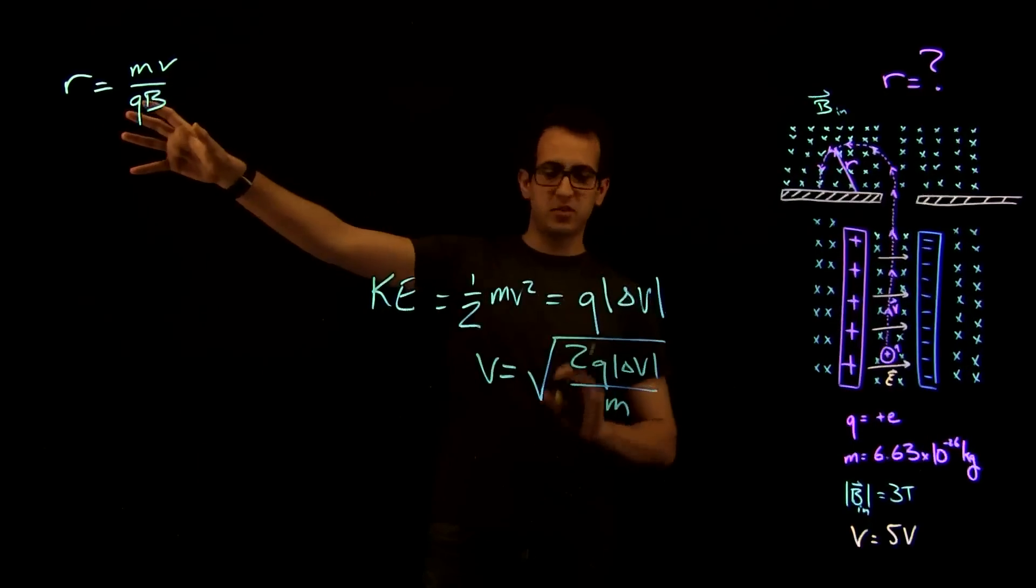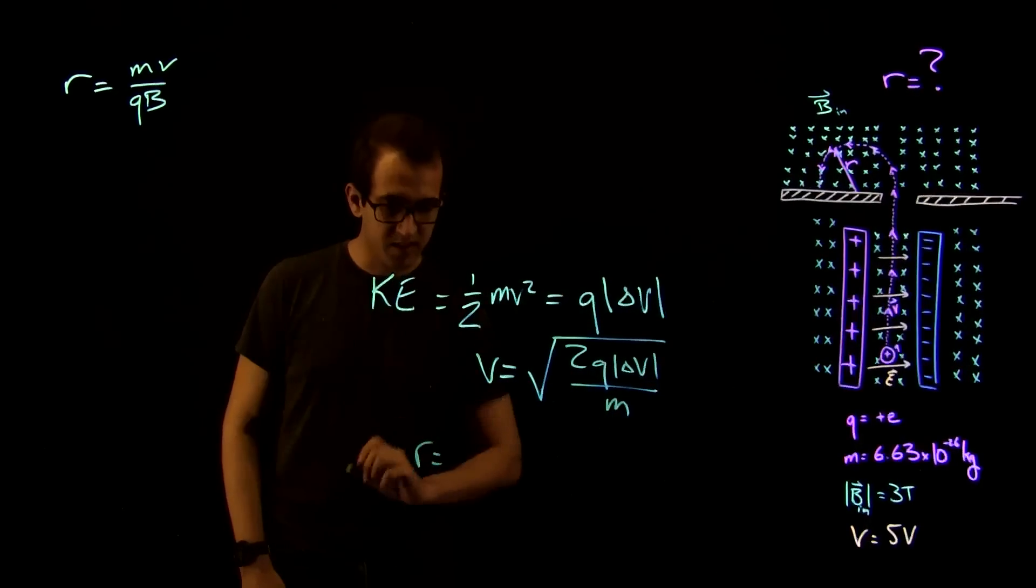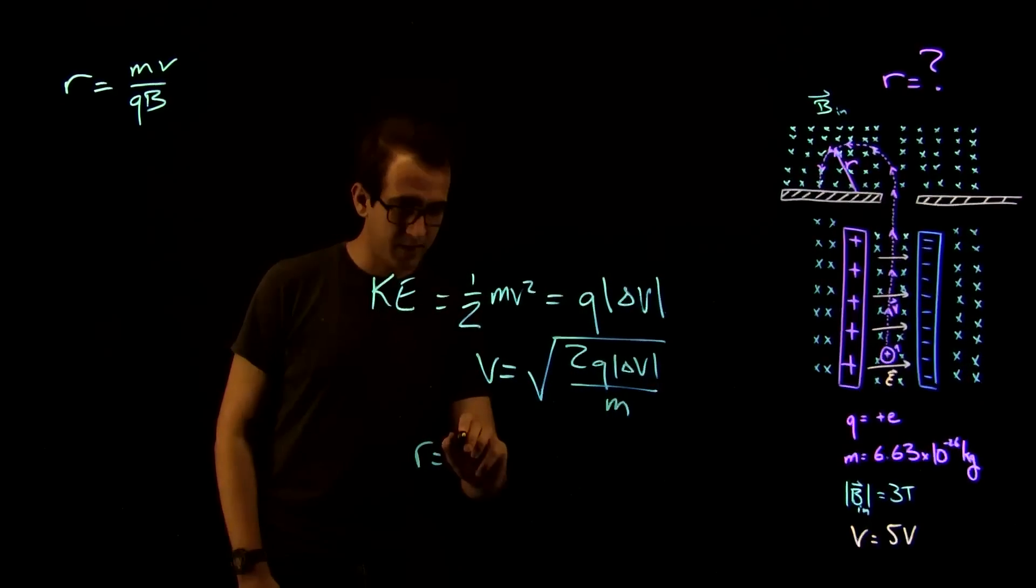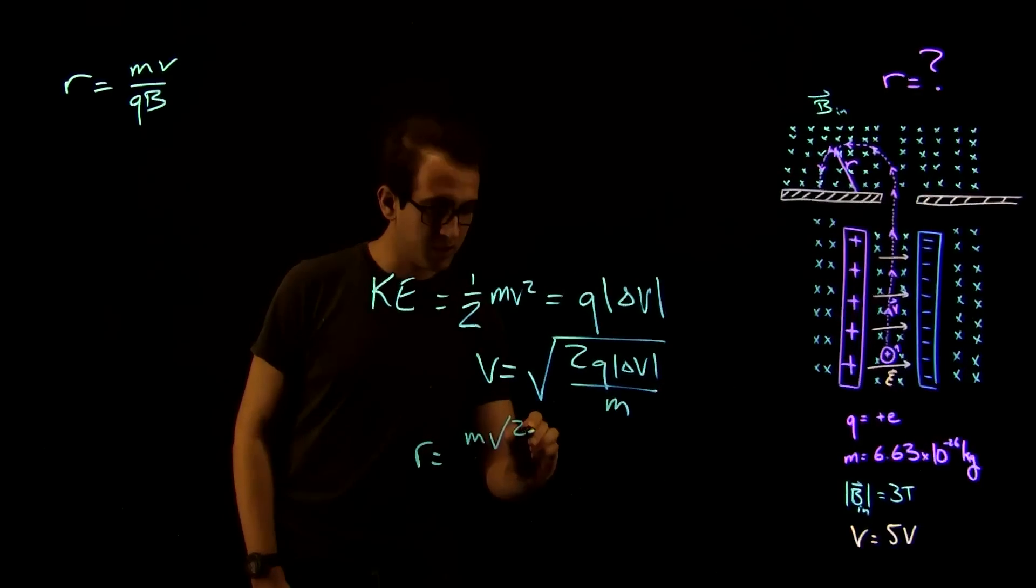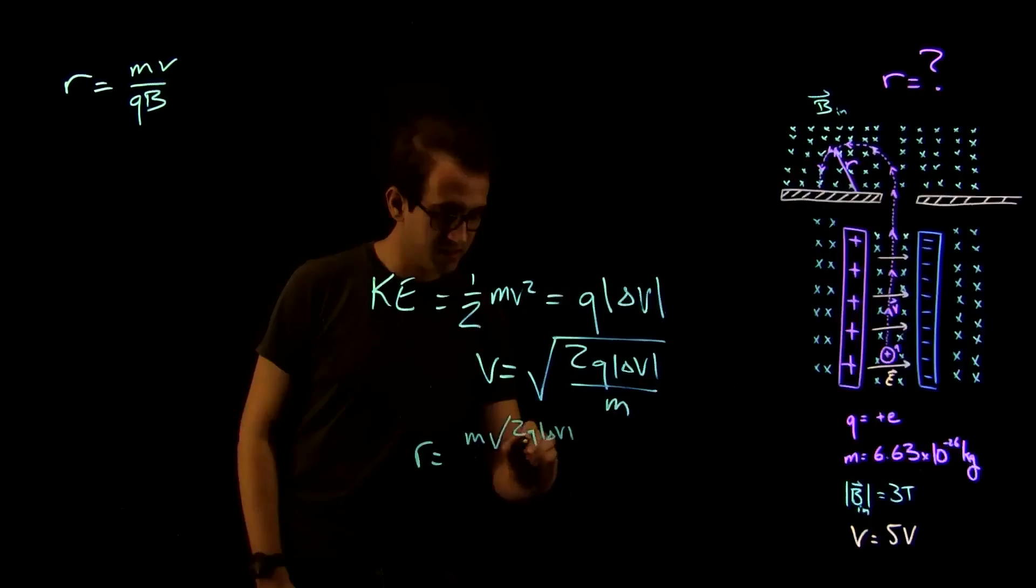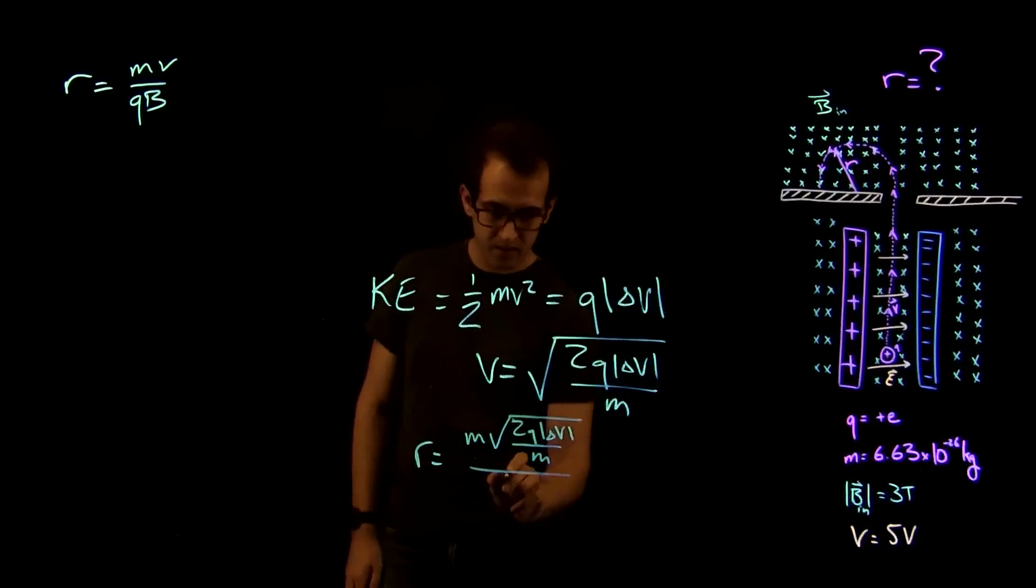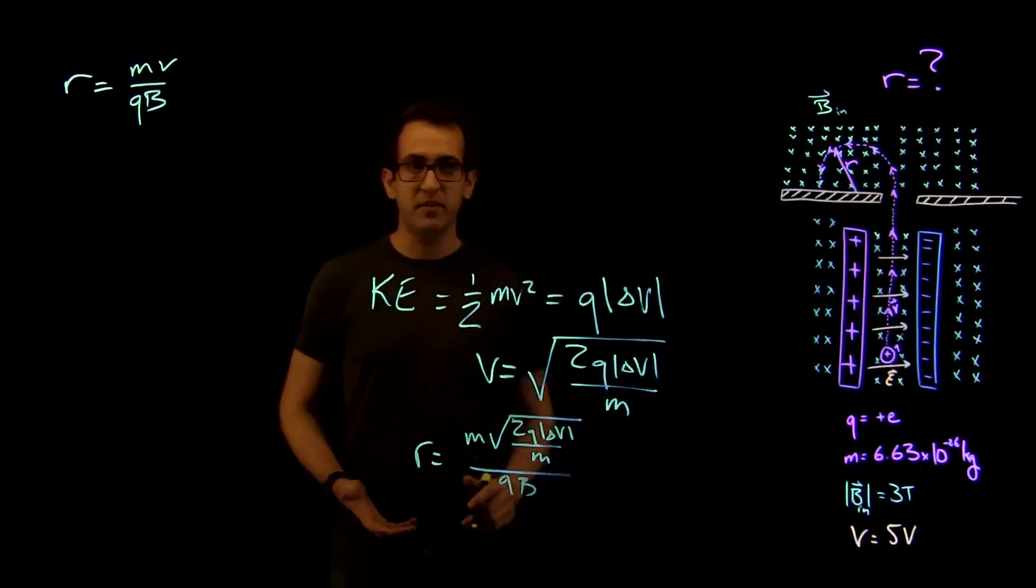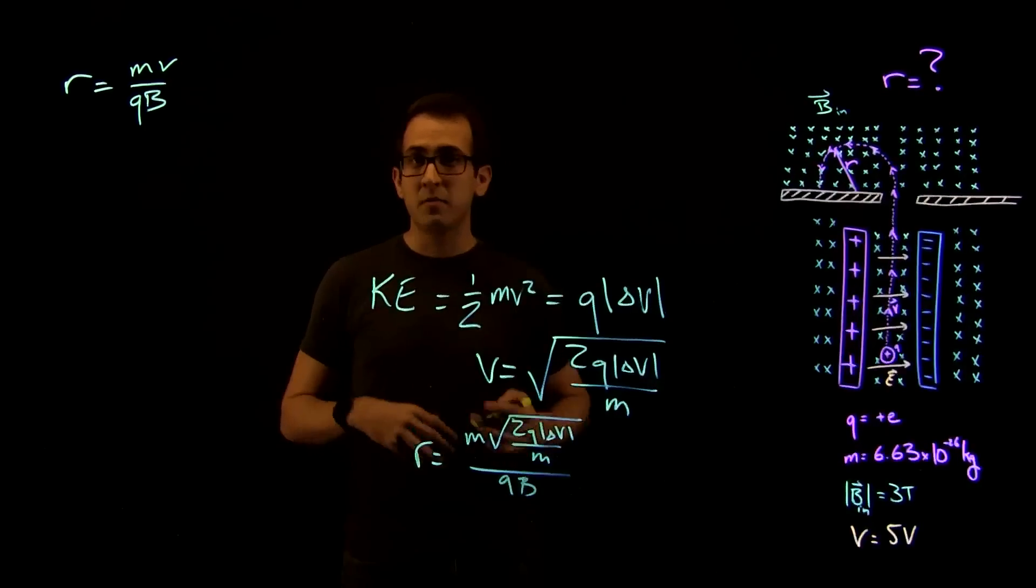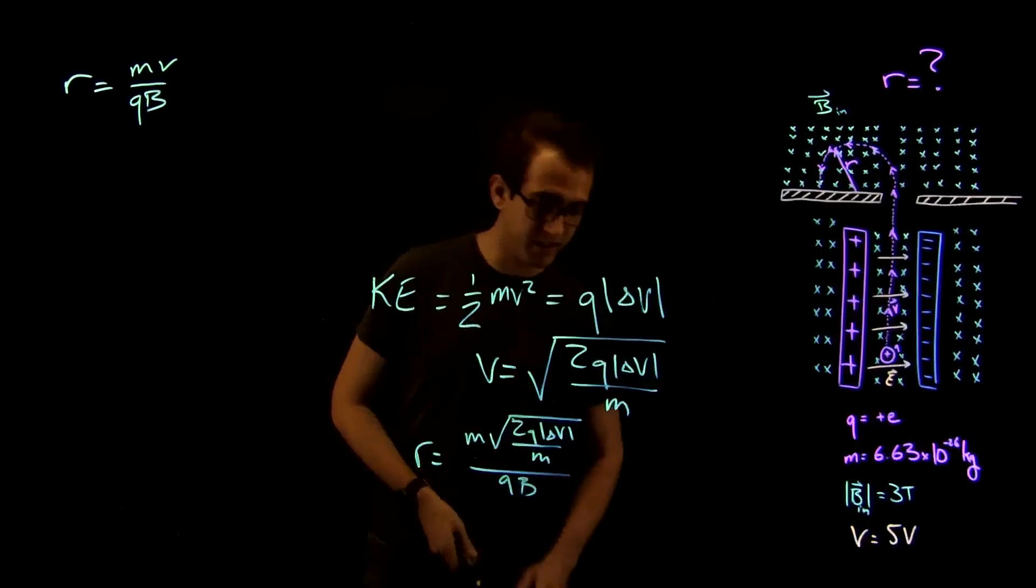But we can combine these two equations now, since this is our expression for V, then we can write R is equal to M square root 2Q delta V over M over QB. We could plug in all the information we have now, but it's probably most convenient to simplify this expression a bit and make it look a little bit nicer.